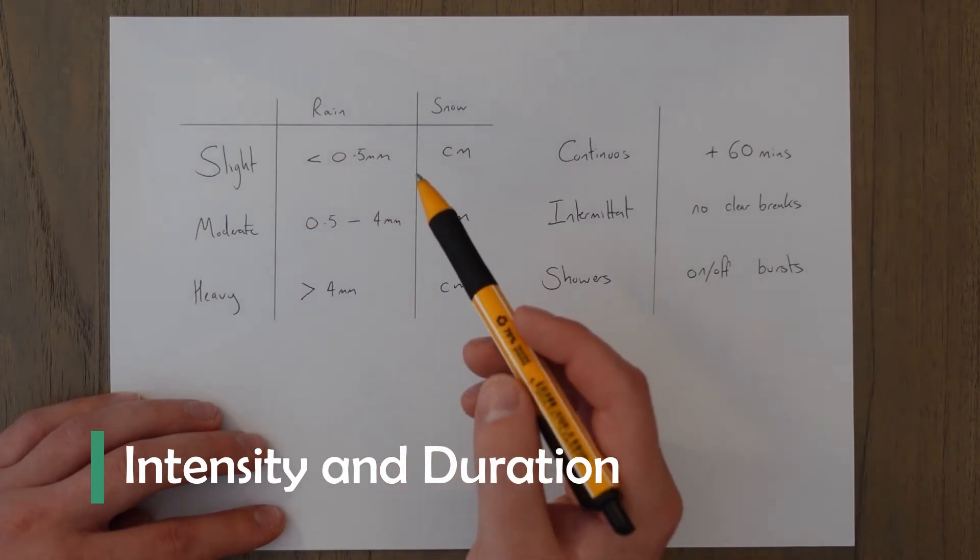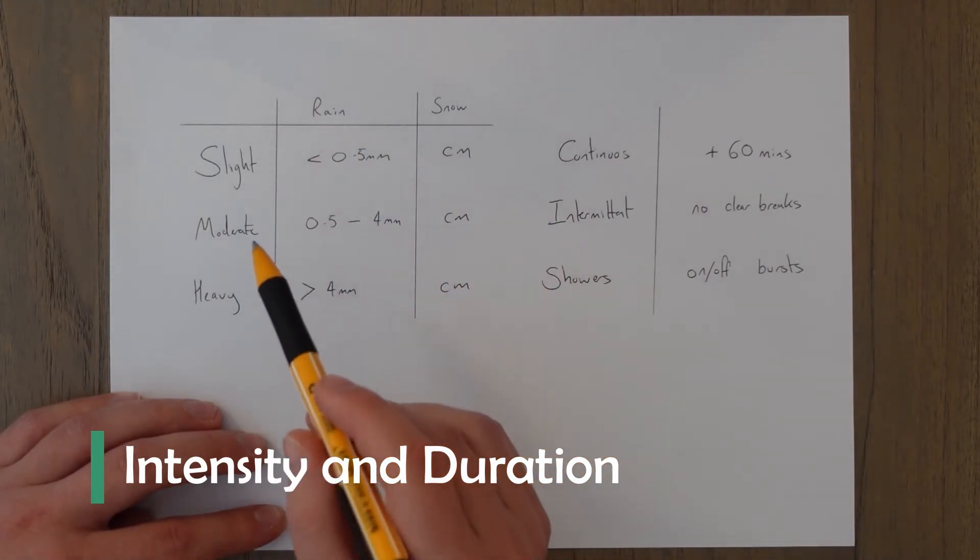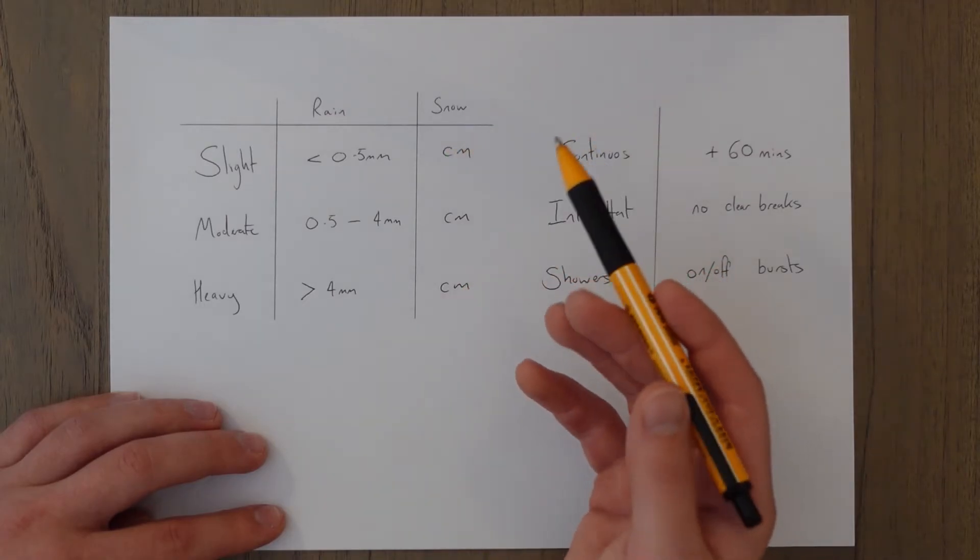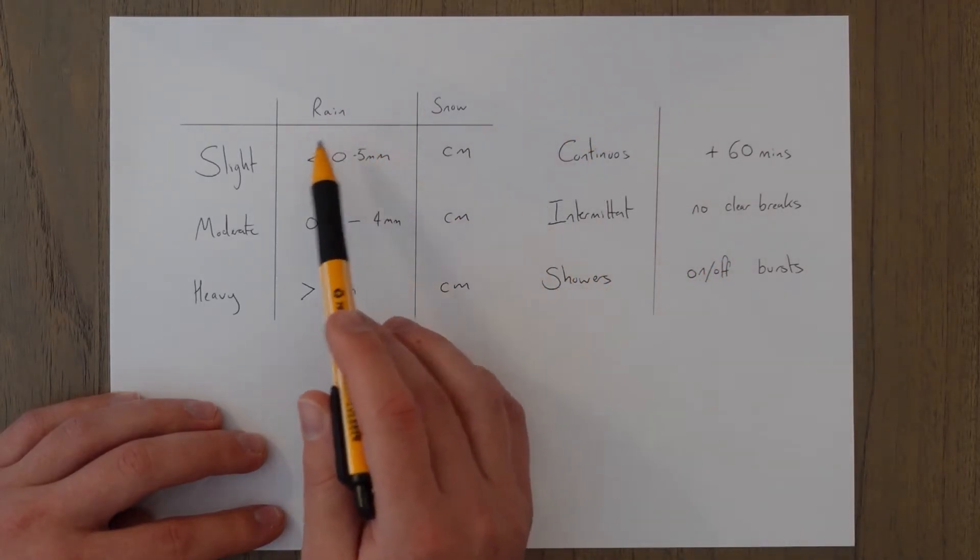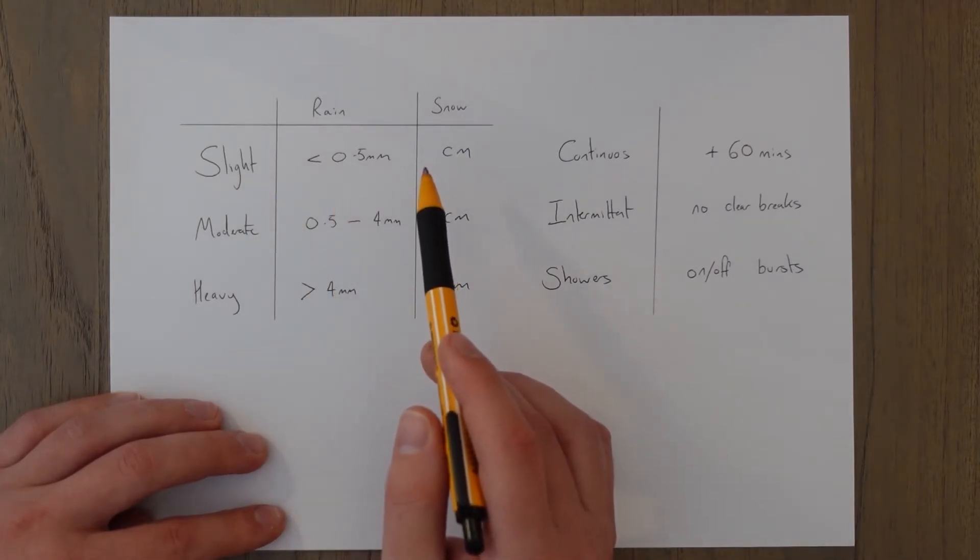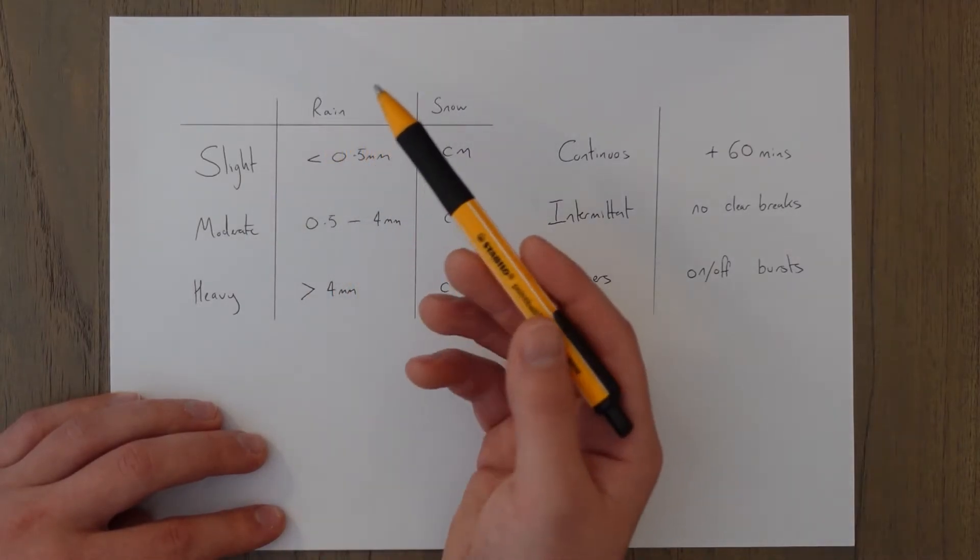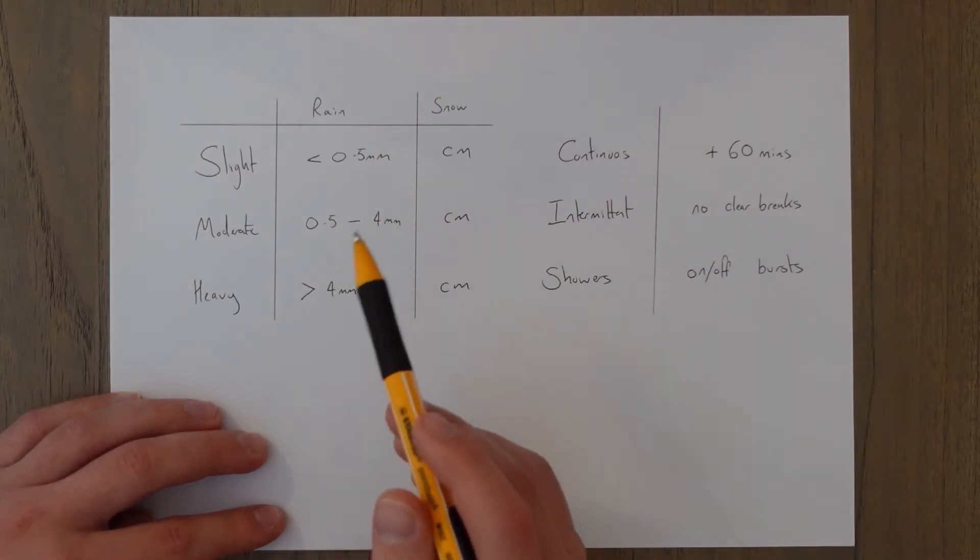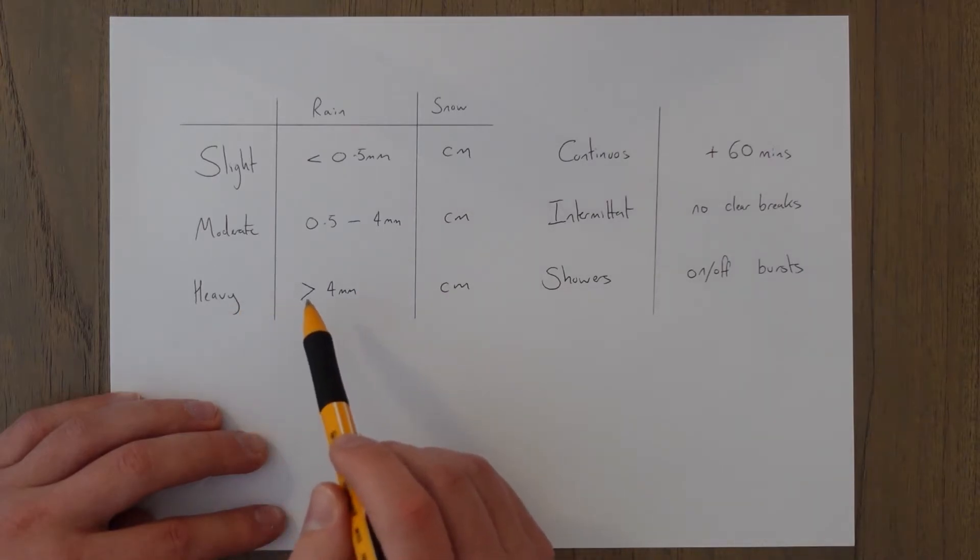Intensity of precipitation is measured in terms of slight, moderate and heavy and it's the amount of precipitation that falls in an hour. You can think of rain and slight as being less than 0.5 millimeters. Moderate would be between 0.5 and 4 millimeters per hour and heavy would be anything more than 4 millimeters per hour.